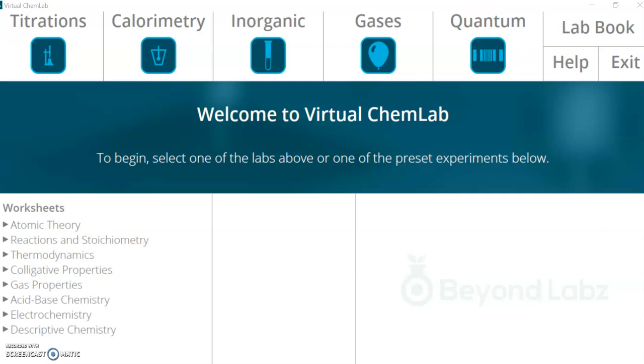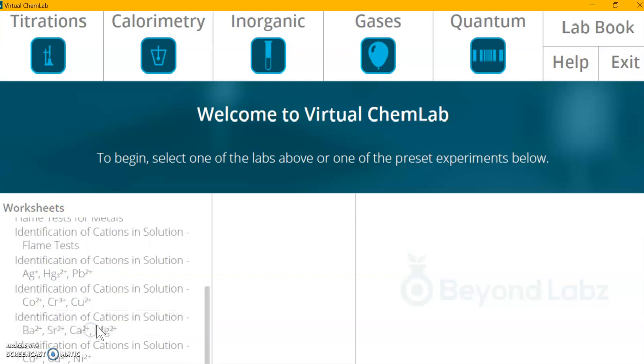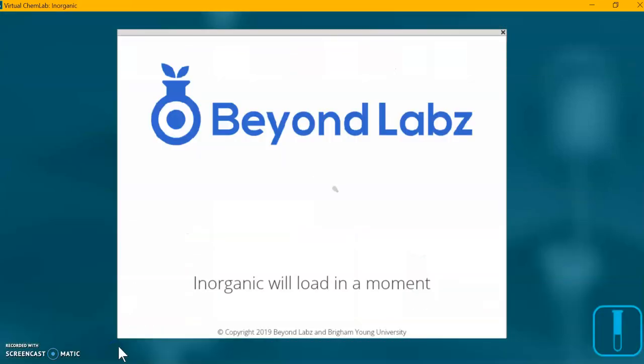Hello, this is Brian and today we are doing the identification of cations in solution: cobalt 2+, copper 2+, nickel 2+. So I've already opened the virtual chem lab, going over here to descriptive chemistry, and we'll click on ours when we want and it will open up the lab.